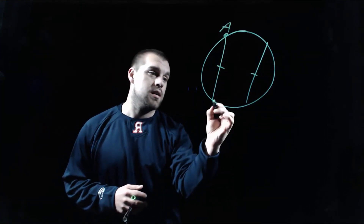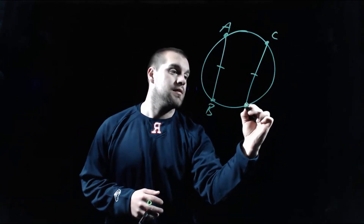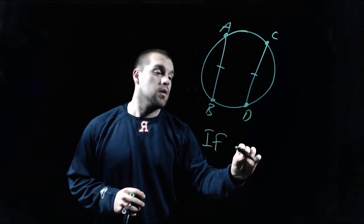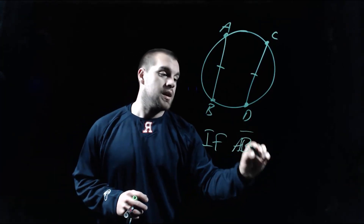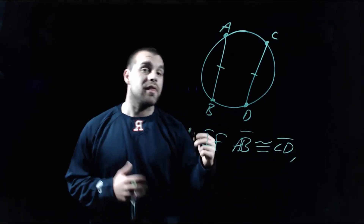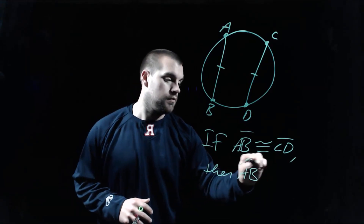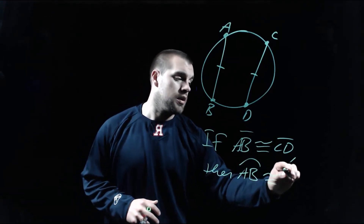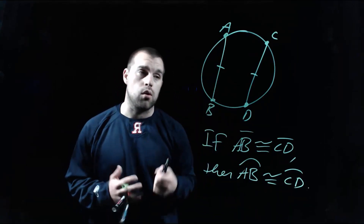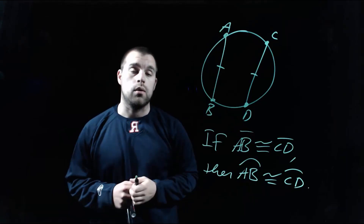Let's give these names — we'll call this chord AB and this one CD. So if segment AB is congruent to segment CD, then arc AB will be congruent to arc CD, because the two chords being congruent makes those two minor arcs on the outside also congruent.